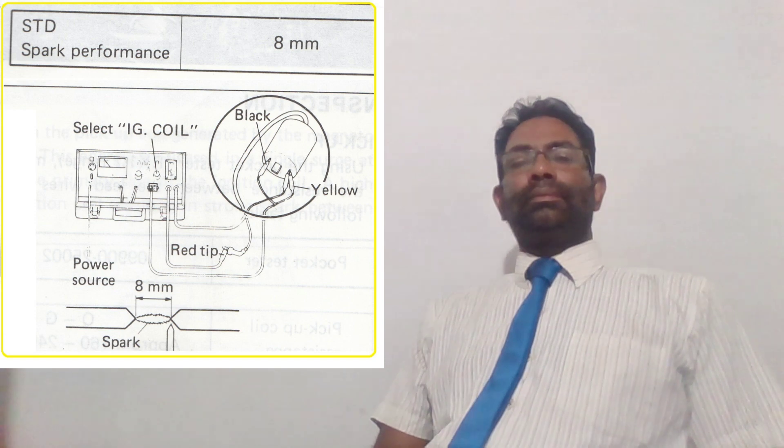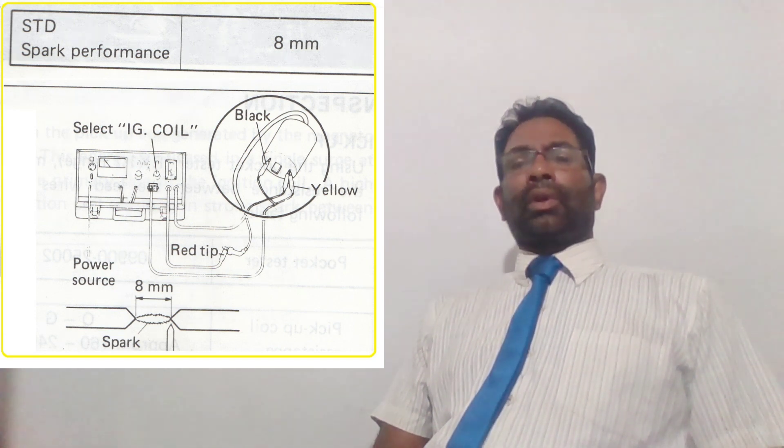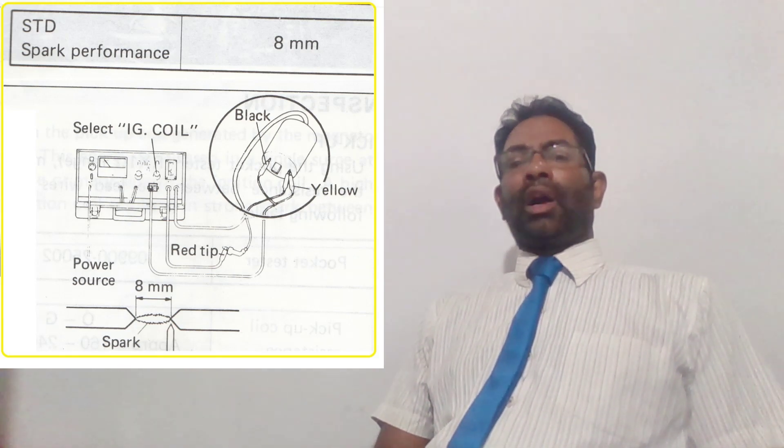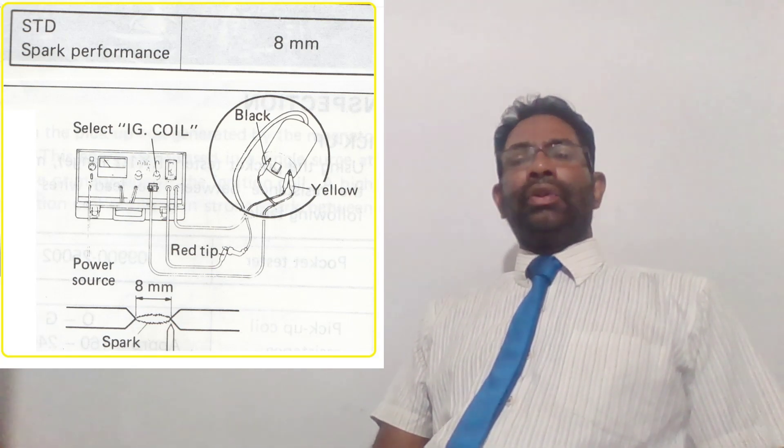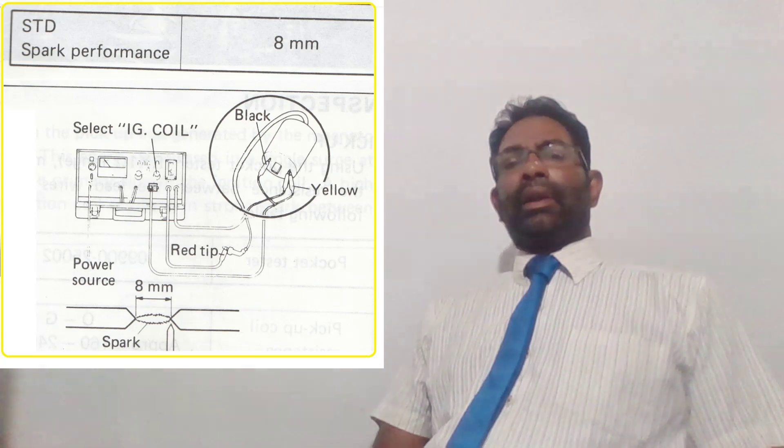Ignition coil. You can use an electro tester for measuring ignition coil spark performance. Apply tester connection with IG coil - black and yellow wire.